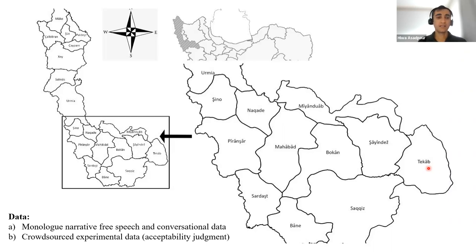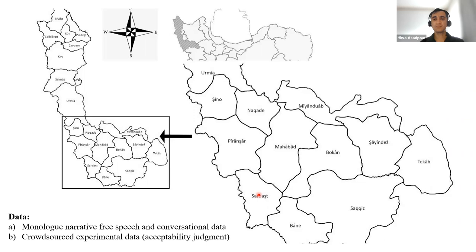The type of data I analyze includes monologue narrative free speech and conversational data. The data I collected during field work throughout my bachelor's, master's, and up to today — even after my PhD, I went to different villages, I went personally there, collected the data, recorded videos and audio recordings from people, and interviewed them with questionnaires. I also did extra data collection by crowdsourcing and experimental data by explicitly asking people about unusual patterns and structures, combining both elicited and non-elicited types of data.